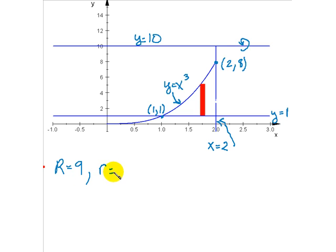When we use washers we have two radii to use. The first one is r equals 9 and the smaller radius is 10 minus x cubed.